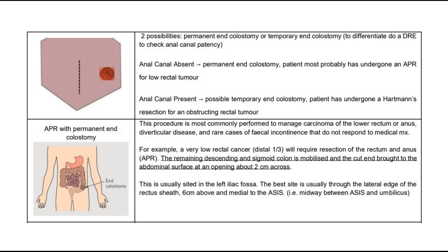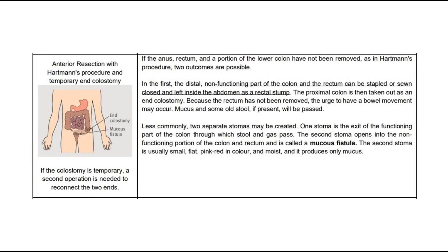For APR with permanent end colostomy, a very low rectal cancer in the distal third will need resection of the rectum and anus. The remaining descending and sigmoid colon is mobilized and the cut end is brought to the skin surface, with the stoma usually in the left iliac fossa. Whereas for anterior resection with Hartmann's procedure and temporary end colostomy, if the anus, rectum, and a portion of the lower colon have not been removed, two outcomes are possible.